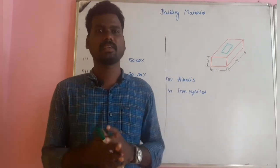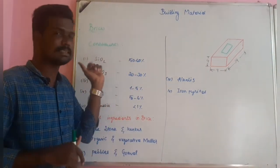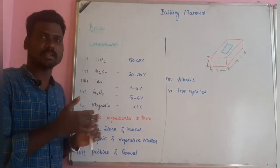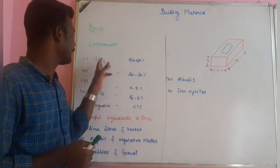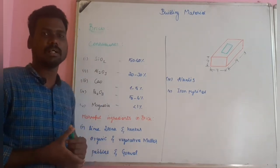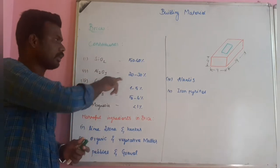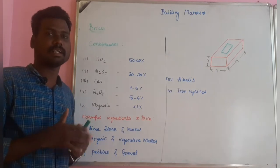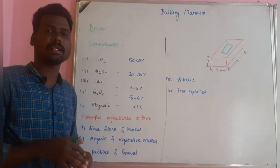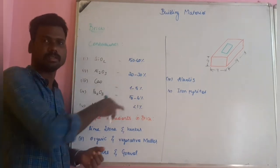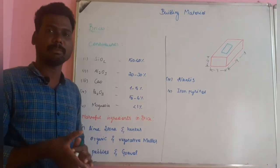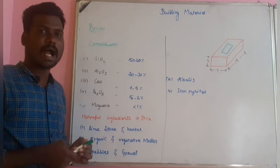This video covers how bricks are made and their constituent materials. The constituent materials of brick are: silica oxide (SiO₂) at 50–60%, which controls shrinkage; aluminum oxide (Al₂O₃) at 20–30%, which controls cracking; lime at 5%, which acts as a binding material; ferric oxide (Fe₂O₃) at 5–6%, which is responsible for the color of the brick; and magnesia at less than 1%, which gives a light yellow color. These are the main constituents of brick.